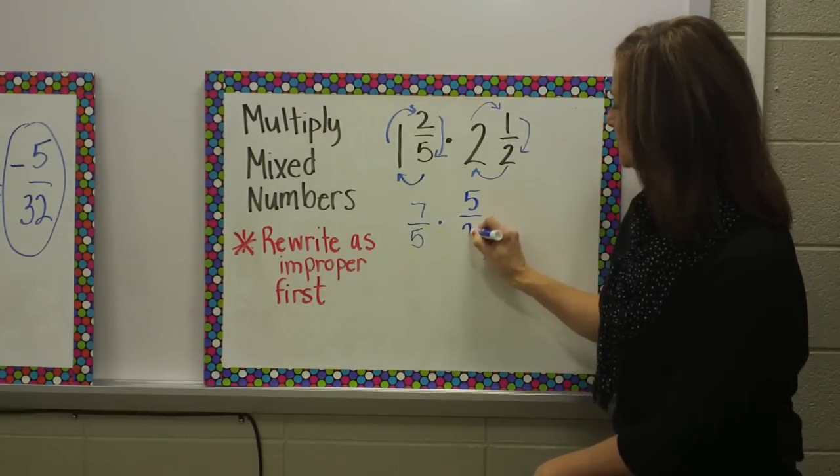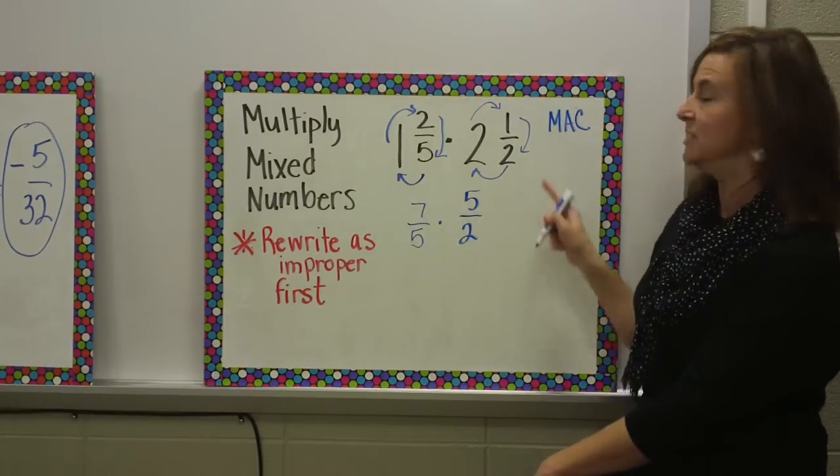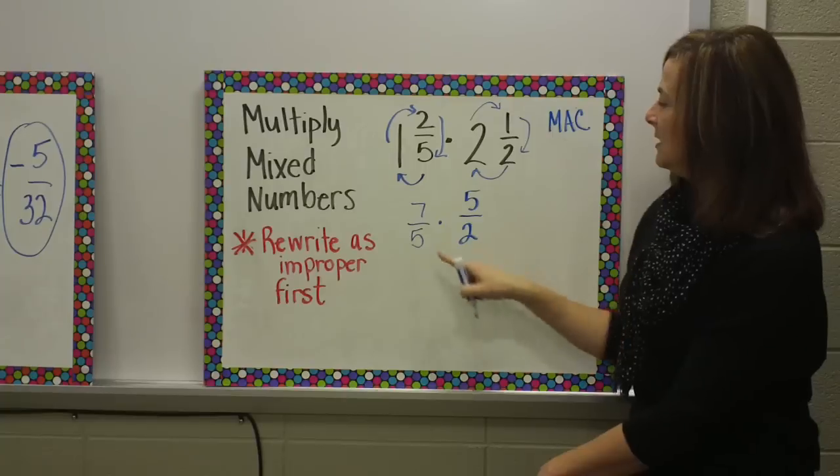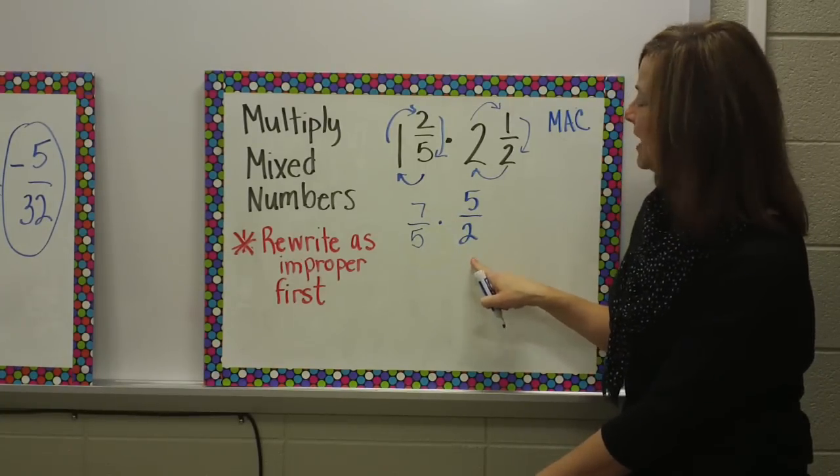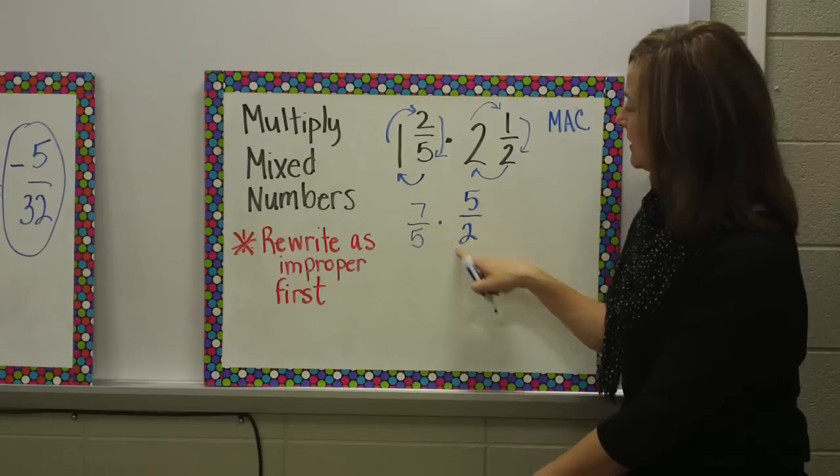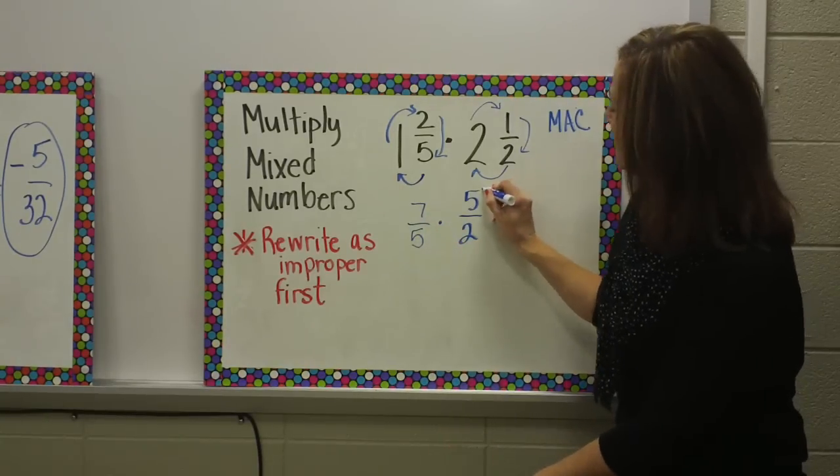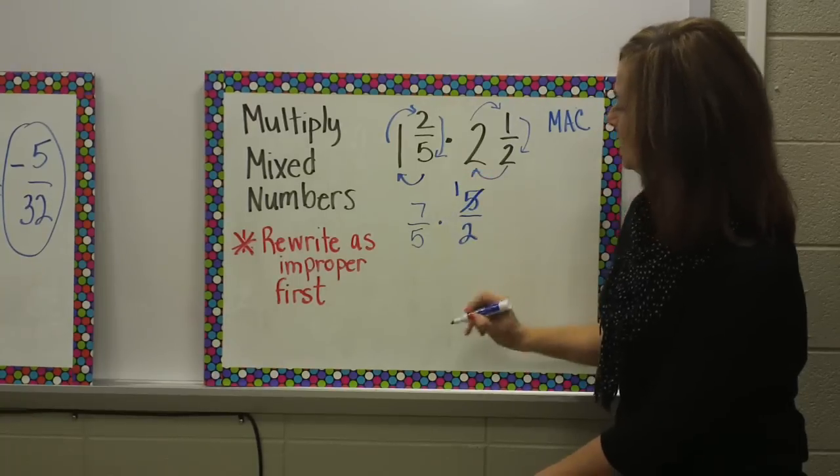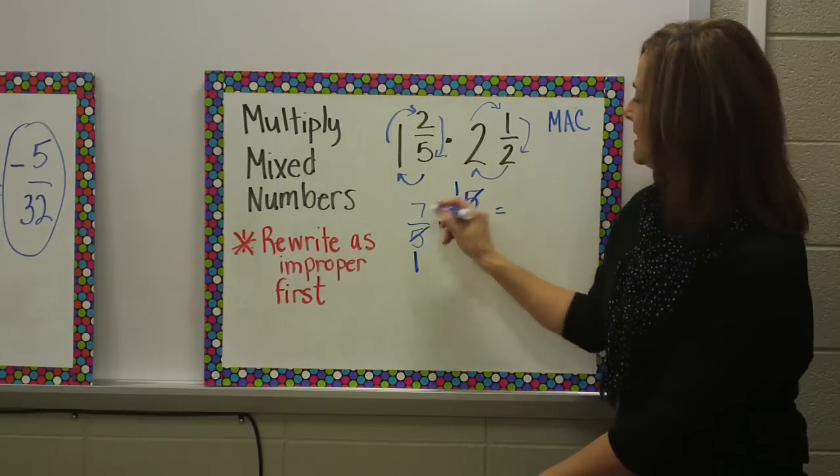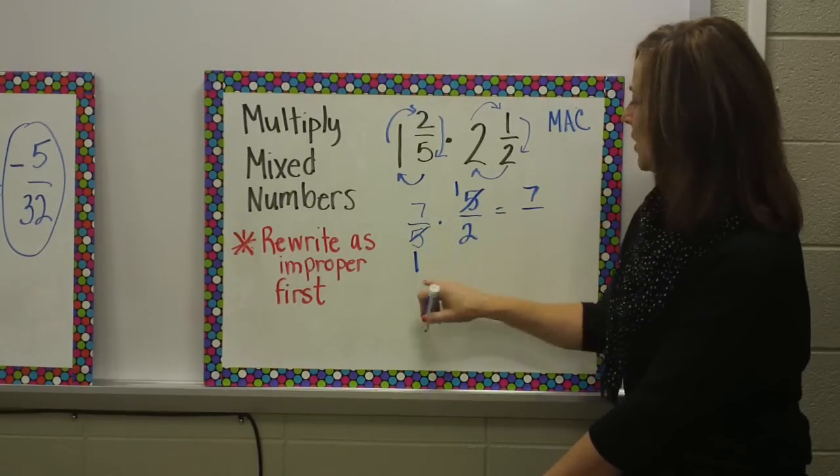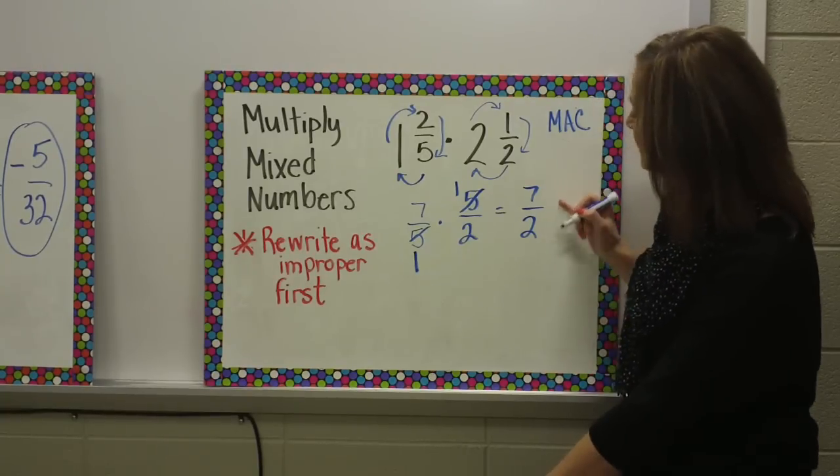Maybe on your notes page, it helps you to write down that little abbreviation of MAC. Now, I have seven-fifths times five-halves. If I look diagonally, seven and two cannot be simplified, but five and five can both be divided by five. Five divided by five is one. Then I can multiply across. Seven times one is seven, one times two is two.